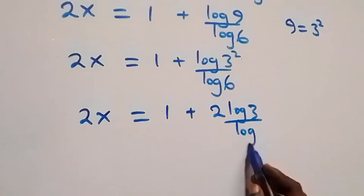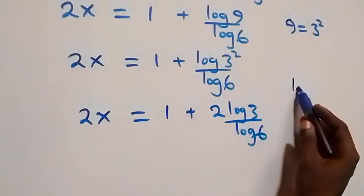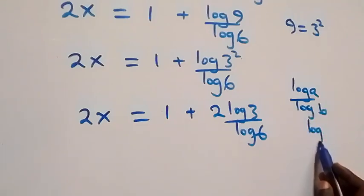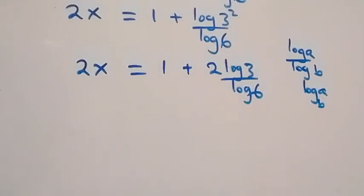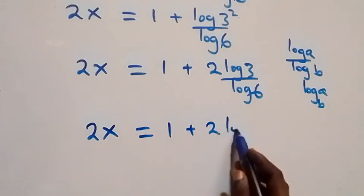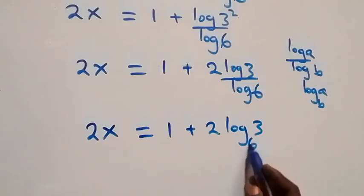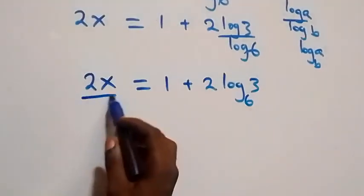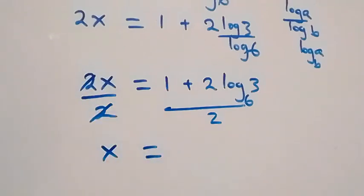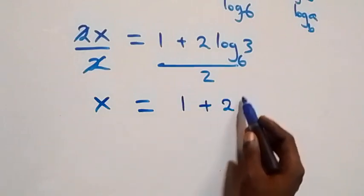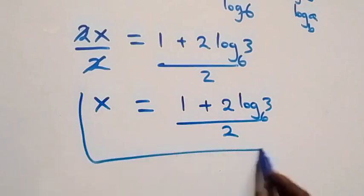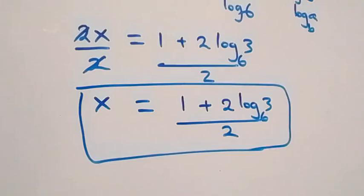Here we apply the change of base rule: log a over log b is the same as log a to base b. So what we have becomes 2x equals to 1 plus 2 log₆3. Then we divide both sides by 2, and we have x equals to (1 plus 2 log₆3) over 2.